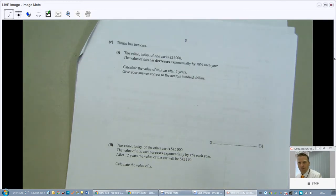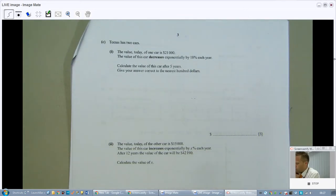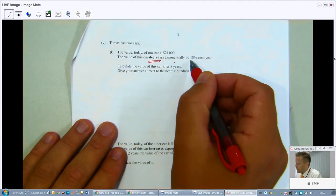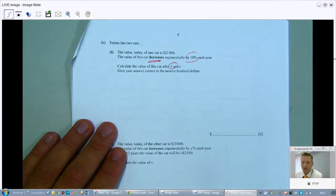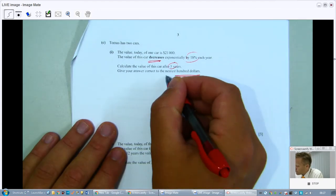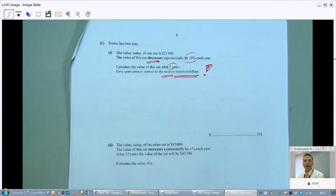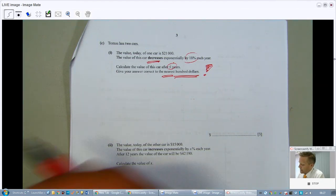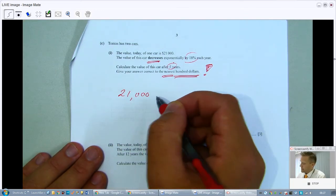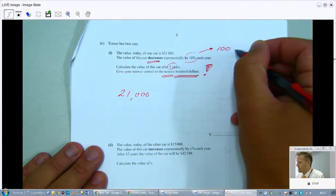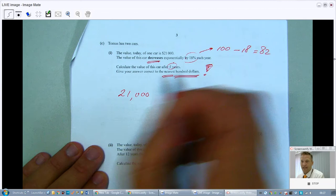Turning the page already. And then we're going to talk about Thomas. Thomas has two cars. And the value today of one car is $21,000. And the value of this car decreases exponentially by 18% per year.